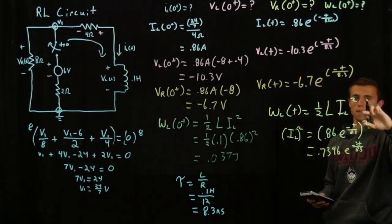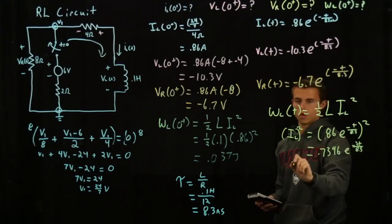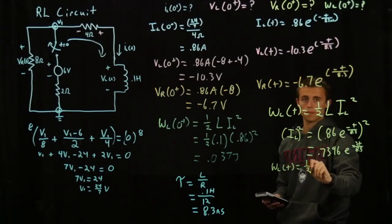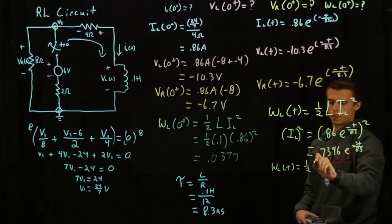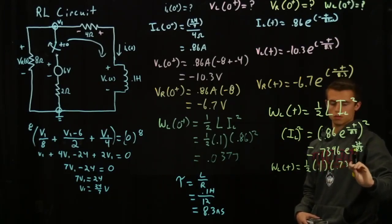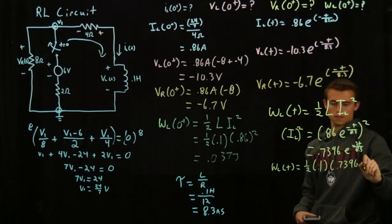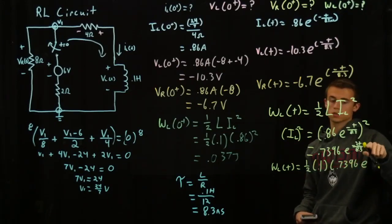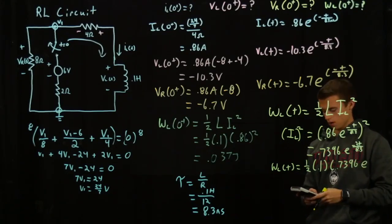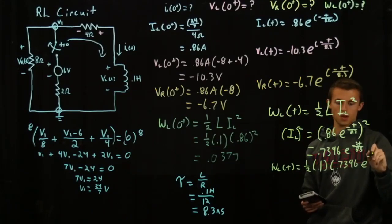So one half, W_L of T is equal to one half times 0.1 times 0.7396 e to the... and to simplify this, two over 8.3 is going to give you 4.15 in the denominator.